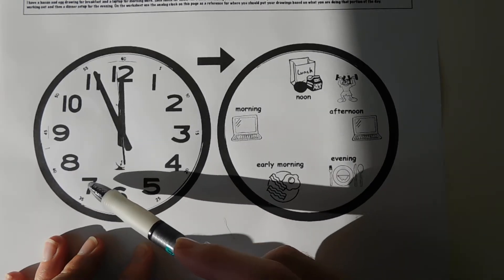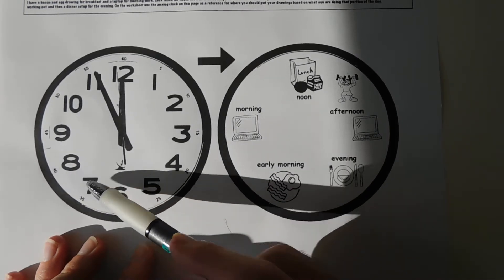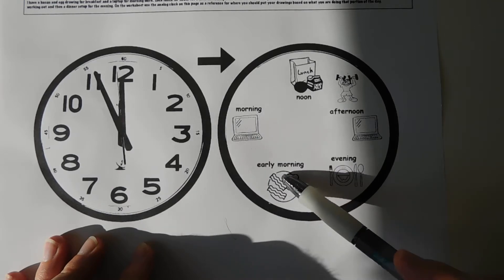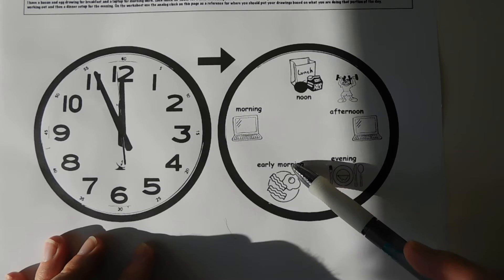So six, seven, eight, you're probably getting up. This is morning time. So for early morning, I had bacon and eggs. That's what I eat for breakfast, so eating breakfast early morning.